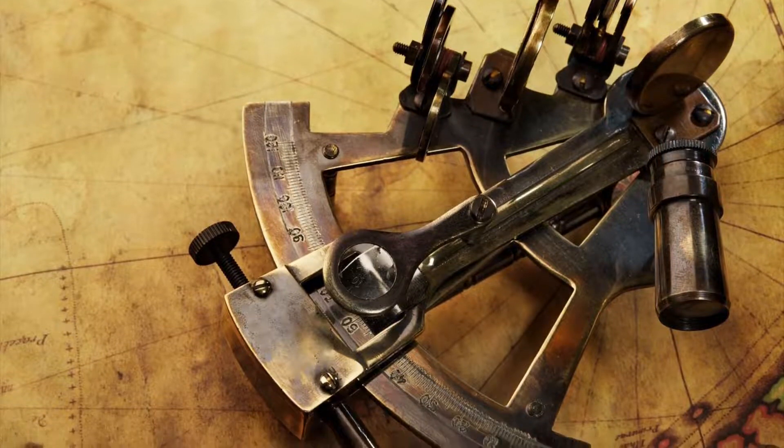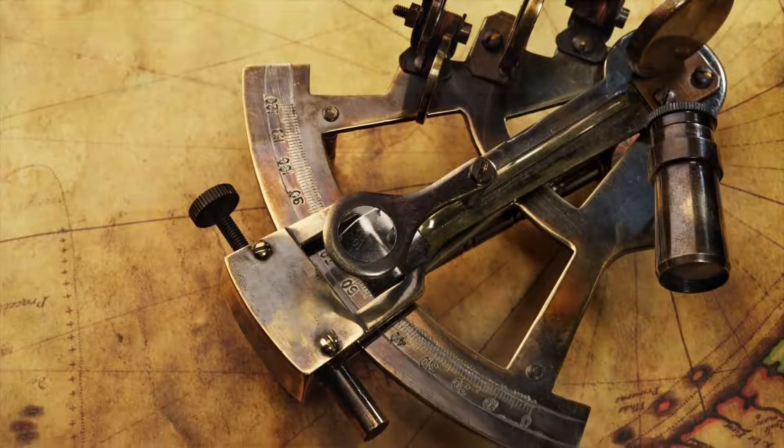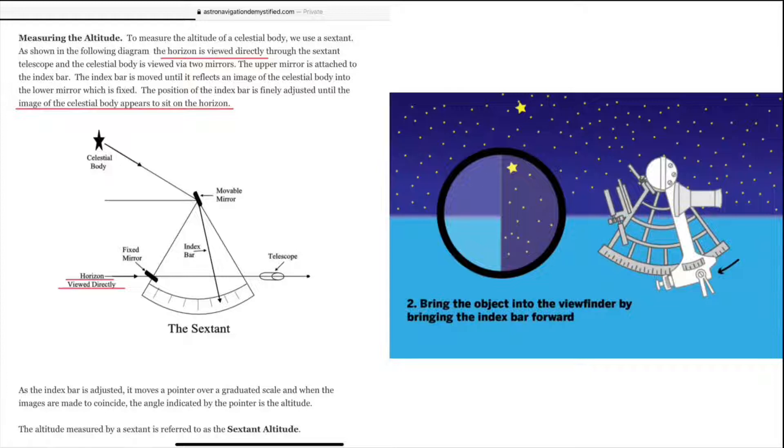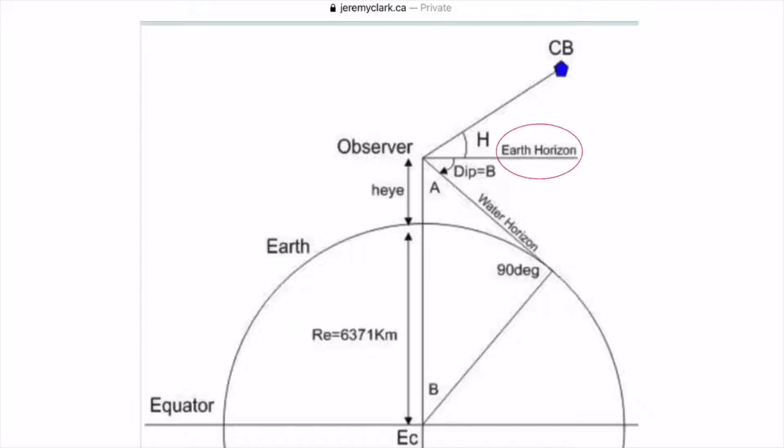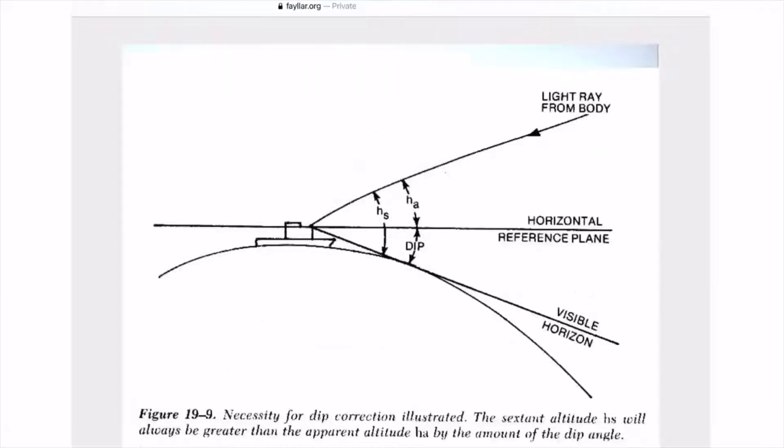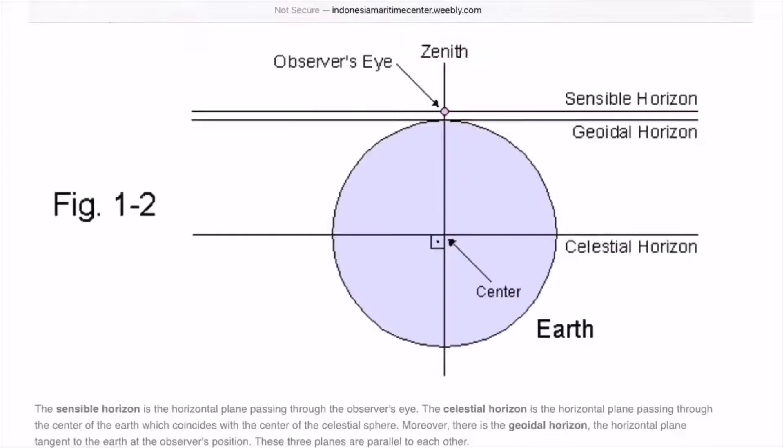We look directly through the sextant at the horizon, but if you live on a globe what horizon are you actually looking at, Globers? Is it the earth horizon? The water horizon? The horizontal reference plane? The visible horizon? How about the sensible horizon? The geodeal horizon? Or the celestial horizon?